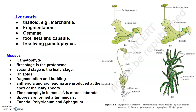After fertilization, the zygote develops into a sporophyte which consists of foot, seta and capsule. The sporophyte in mosses is more elaborate than in liverworts. The capsule contains spores, and the spores are formed after meiosis. Mosses have a very elaborate mechanism of spore dispersal. Common examples are Funaria and Sphagnum.